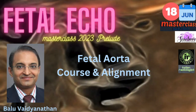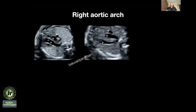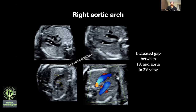Now we see right aortic arch. The first clue for right aortic arch comes from the three vessel view. A normal three vessel view shows three vessels stacked one upon the other, close to each other. Here you can see there is an increased gap between the aorta and the PA, and the trachea is actually seen already between the aorta and PA. In color also you can see this increased gap — that is the first clue for right aortic arch in the three vessel view.